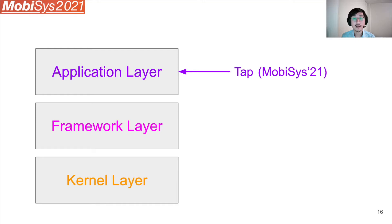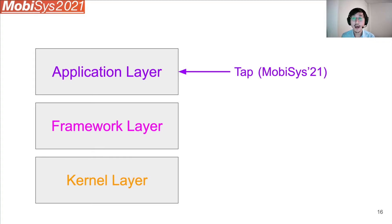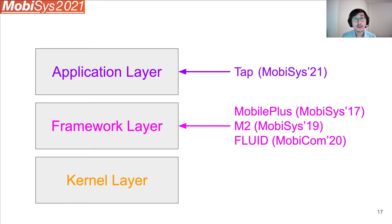For example, TAP is an application layer solution, which means you need to modify mobile apps to take advantage of TAP. However, you don't need to modify anything in the framework layer or the kernel — you don't need to modify the OS — which means deployment is easier. Also, apps are aware they are using TAP, so they can customize how to leverage it. Other works like MobilePlus, M2, or Fluid implement resource sharing in the framework layer. This means they can be transparent to mobile apps and support unmodified apps, but it is more difficult to deploy because the framework layer needs to be modified, and it's also difficult to keep up with OS updates.